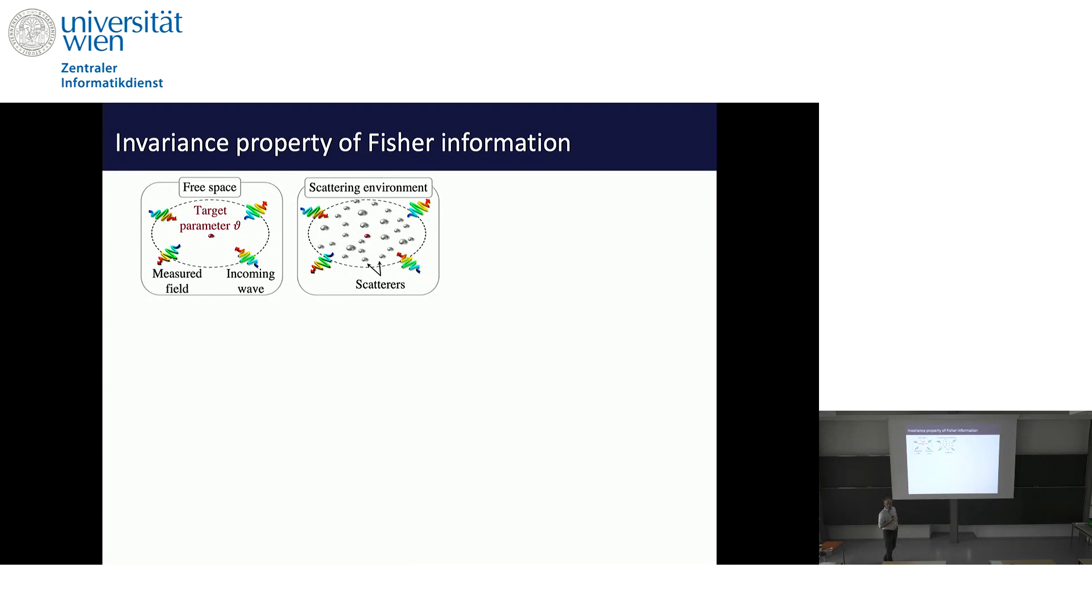You can ask the question, let's say you have a particle somewhere and you want to measure the position of this particle very precisely, which is a common problem, for example, in metrology. You can ask the question, does it actually make a difference if this particle is in free space or if it's embedded in a complicated environment? Typically you would think if you embed a particle into a complex scattering environment like a disordered medium, of course you will not be able to get the same amount of information about this particle and therefore also not be able to measure its position as precisely as here. But that's not true.